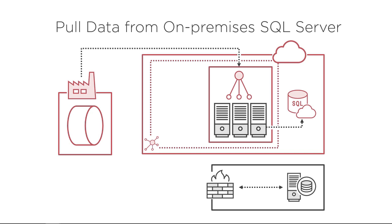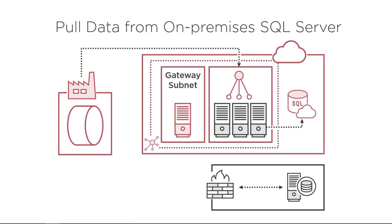To allow this communication to happen, you also create a virtual network gateway that sends encrypted traffic over the public internet. The gateway handles all communication from the on-premises network and is nothing but a set of virtual machines deployed in a gateway subnet within the same virtual network. Finally, you create a point-to-site VPN, a site-to-site VPN, or an ExpressRoute connection between the two networks. We will use a point-to-site VPN to establish the connection, and this is the architecture we will achieve in the next clip.